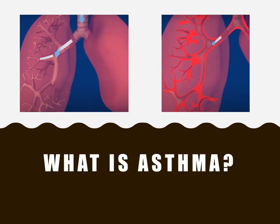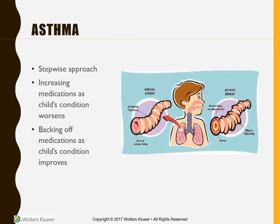Asthma is a chronic condition that affects the airway — the walls become inflamed, muscles tighten, and less air flows to the lungs, with increased mucus production. Symptoms include wheezing, coughing, shortness of breath, and chest tightness. Risk factors include genetics and environmental factors. Asthma medications follow a stepwise approach. If symptoms occur more than twice a week, medications are added — starting with a short-acting beta agonist, then a steroid, then a long-acting beta agonist. As the child improves, medications are stepped back down. Some children have seasonal asthma and medications increase automatically at certain times of year.